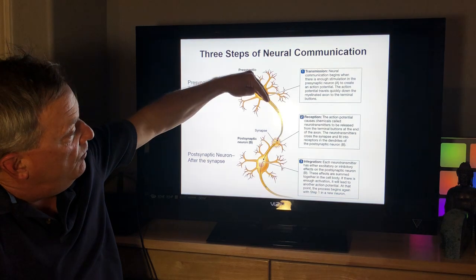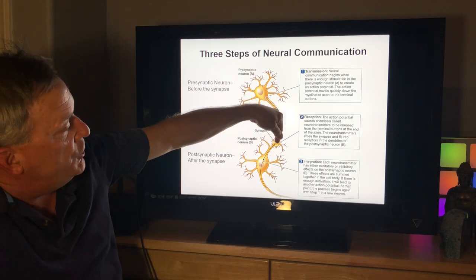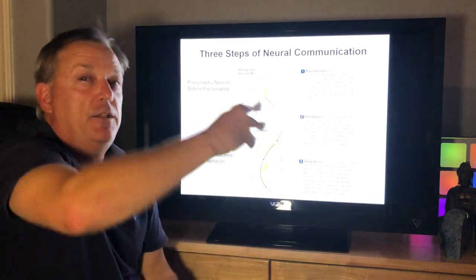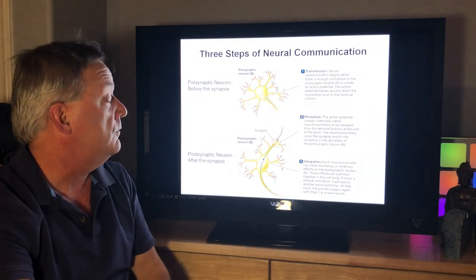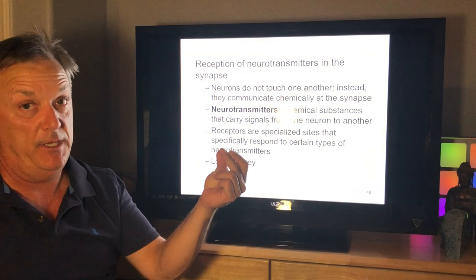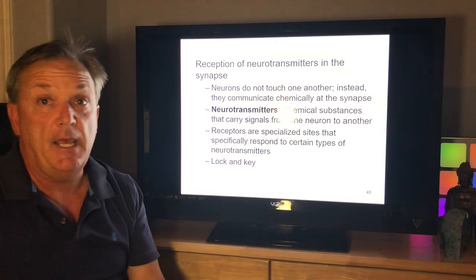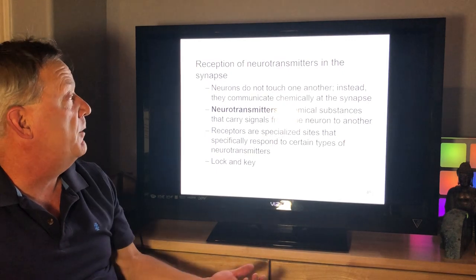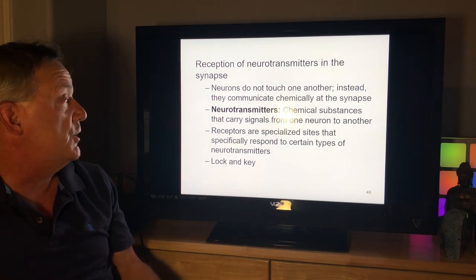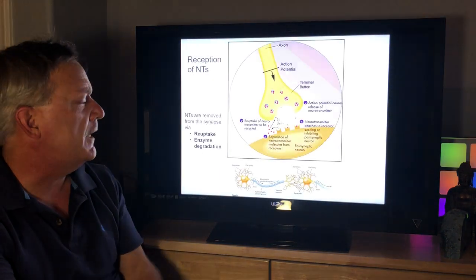From the soma down into the axon, the signal is allowed to jump really fast by the myelin sheath and nodes of Ranvier, which allow it to jump spots — enabling you to think very instantaneously and fast. Neurons do not touch one another; instead they communicate chemically at the synapse. Neurotransmitters are chemical substances that carry signals from one neuron to the other, and receptors are specialized sites that specifically respond to certain types of neurotransmitters — sort of like a lock and key phenomenon.